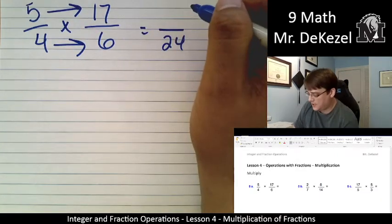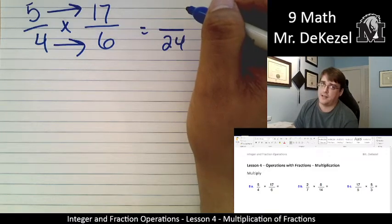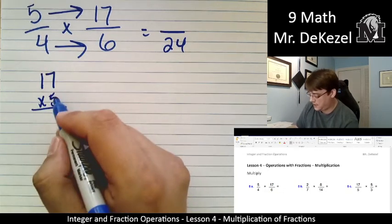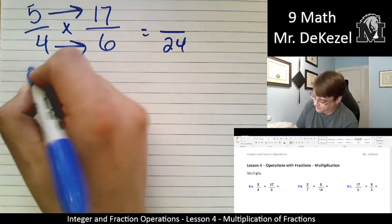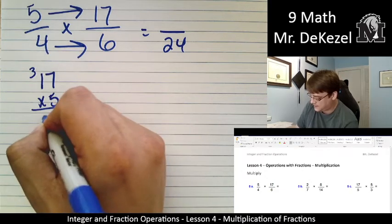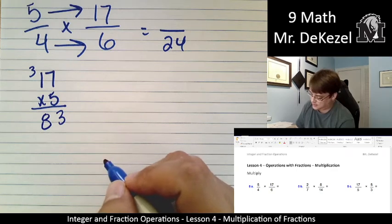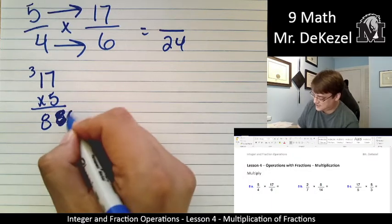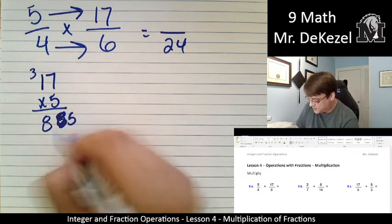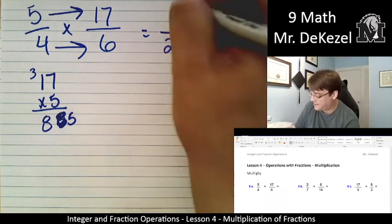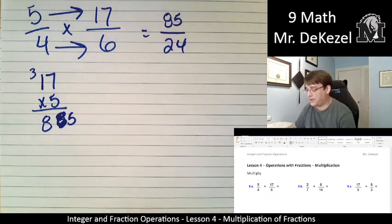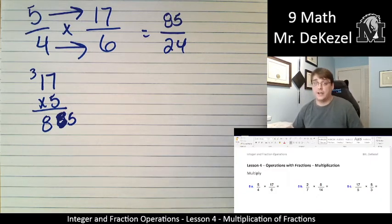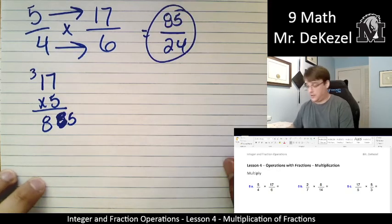I always do the easiest ones first, and then I'm going to do 5 times 17. 5 times 7 is 35, and then 5 times 1 is 5 plus 3 is 8. 83? No, I made a mistake. This is a 5, right? 5 times 7 is 35, so I should have written a 5 here, not a 3. So this is 85. So that's 85 over 24, and I'm like 96% sure we cannot reduce that fraction anymore. So that is what we are going to call our answer.